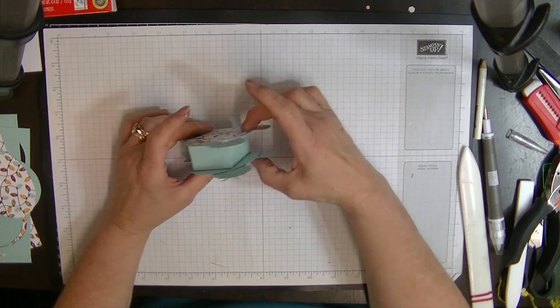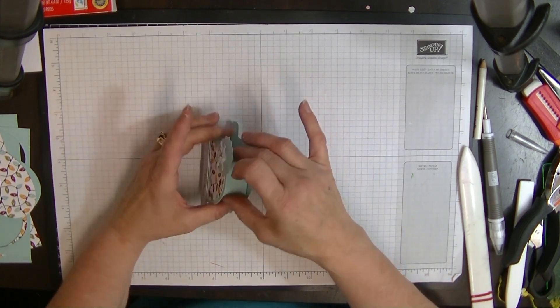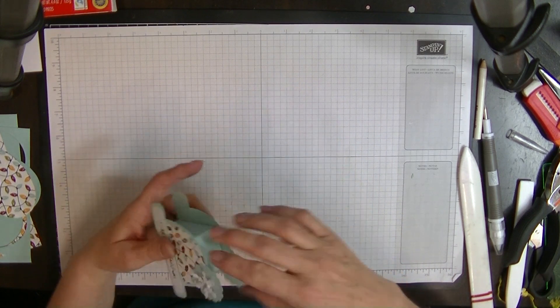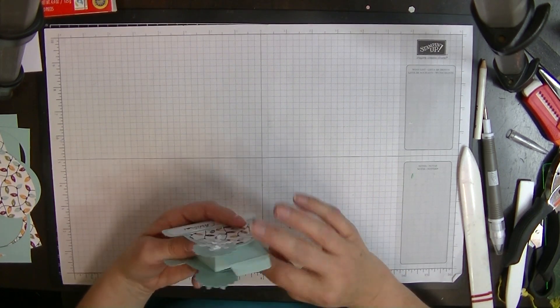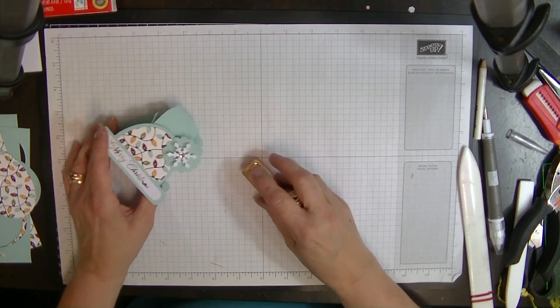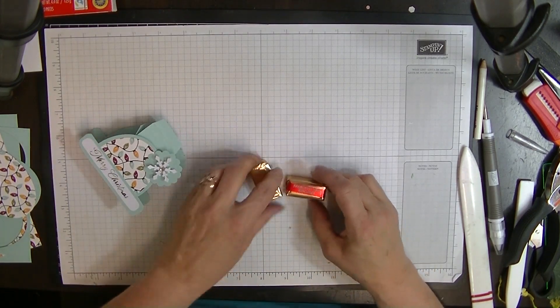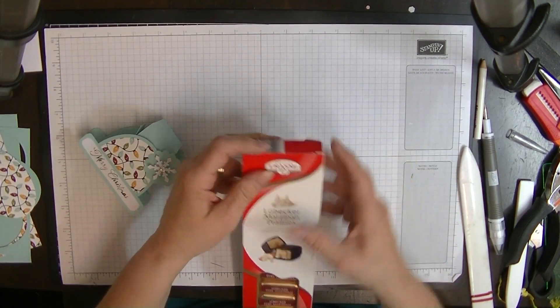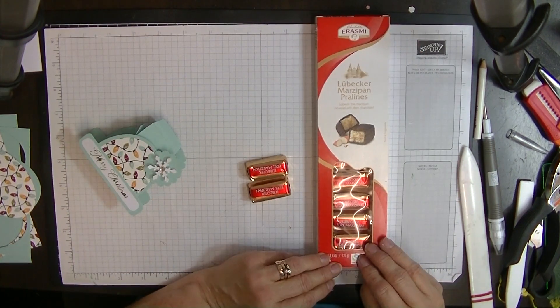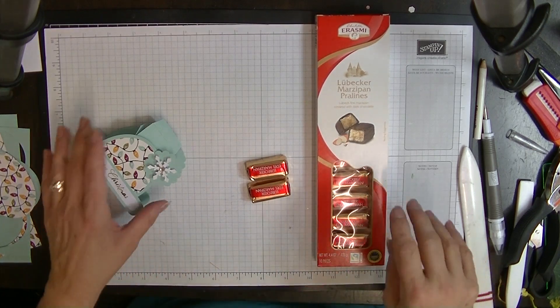Anyway, this is today's party favor. It's a little box like here. If I can open it. Here we go. And it holds two of these marzipan pralines that you buy from Aldi. Please don't ask me to buy any more because I will eat them all because I love them. I love marzipan.